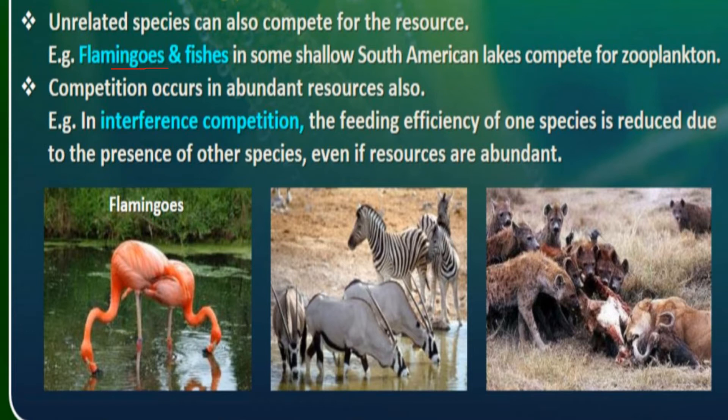In interference competition, one species is unnecessarily interfering with the natural habitat of the other species. Though there is abundant availability of natural resources, they are unnecessarily fighting among themselves. Such type of competition is called interference competition.